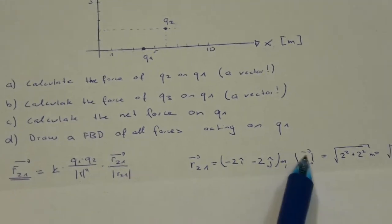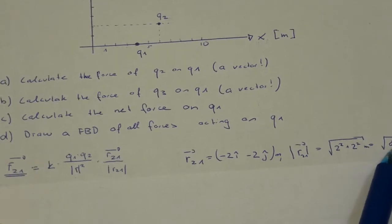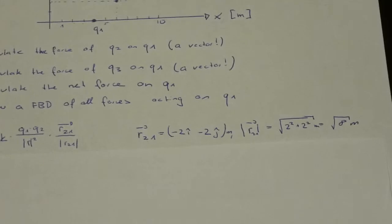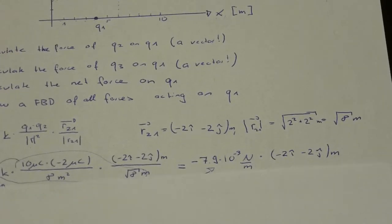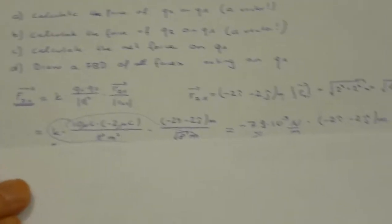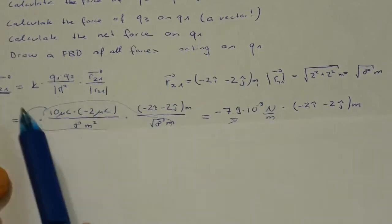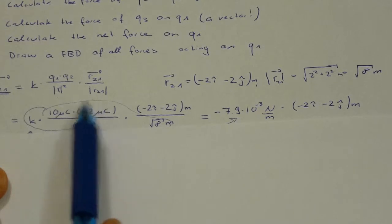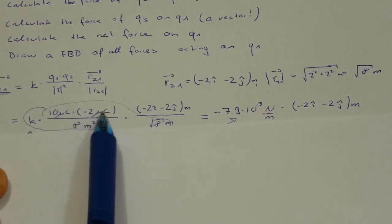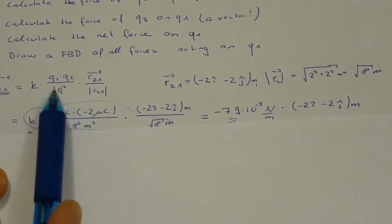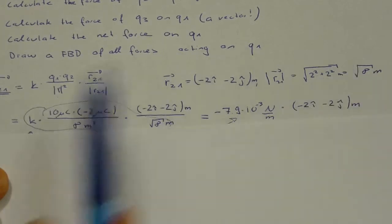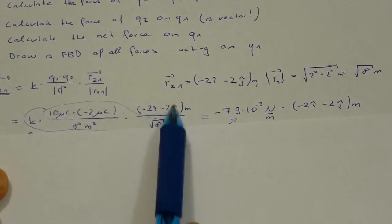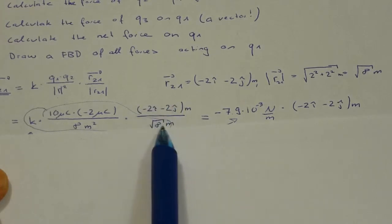The magnitude of it will just be the square root of 8 meters. So let's plug this in. So k times 10 microcoulombs times minus 2, we keep the sign here. We don't do the absolute values.